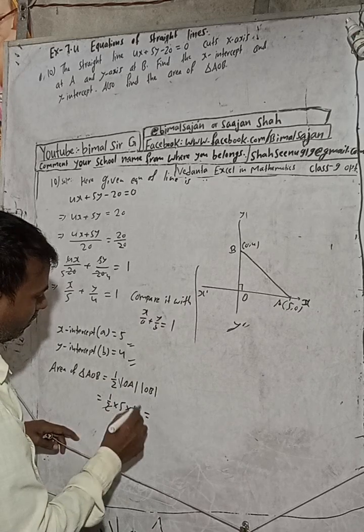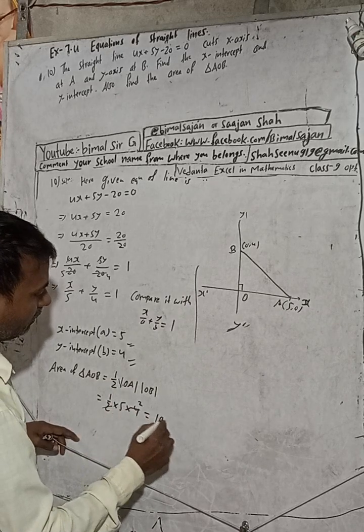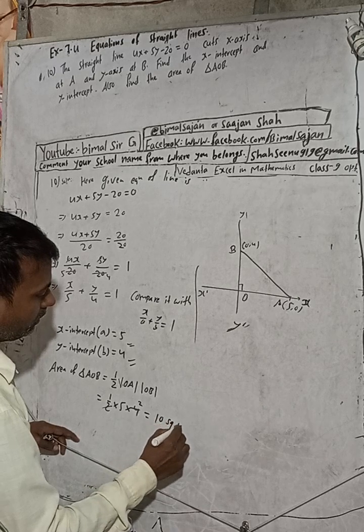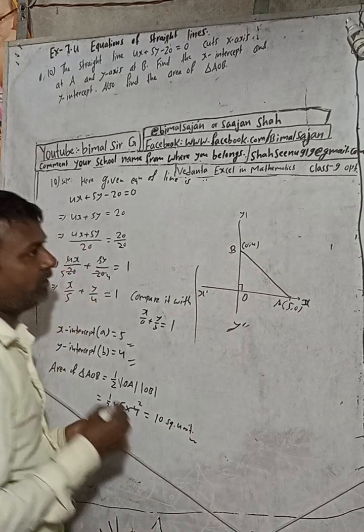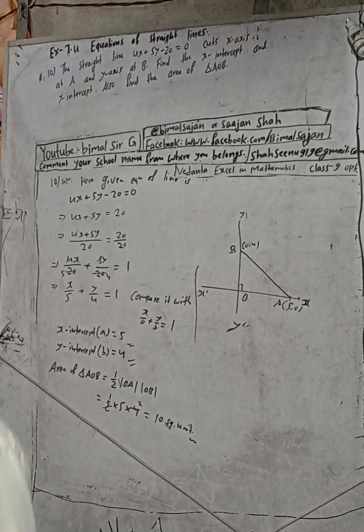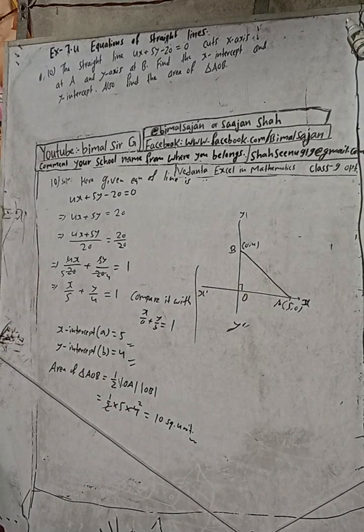That's why to make that positive, we are taking this modulus. Now this is half into OA. OA is our 5 into OB. OB is our, the y-intercept, 4. So when we divide this, this is 2 times 2, 4 times 5 is 10. This is our 10 square units. This is our required answer, 10 square units.